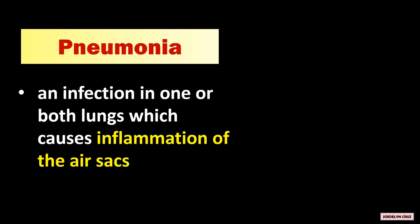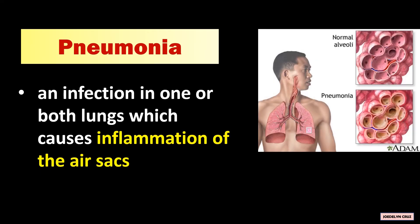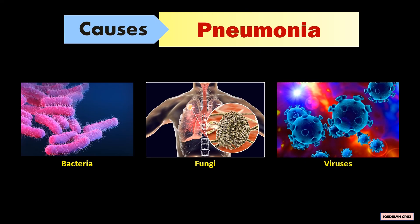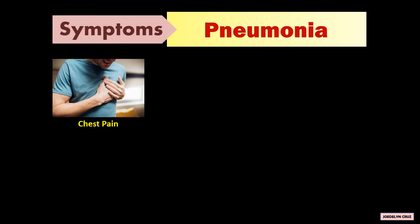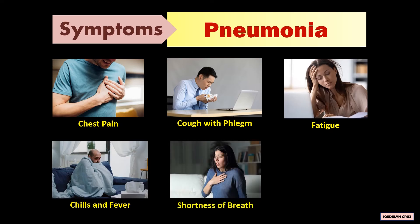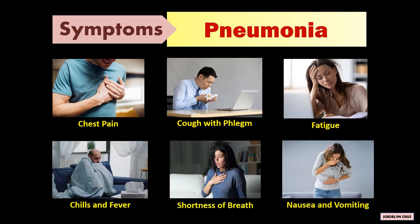Pneumonia is an infection in one or both lungs which causes inflammation of the air sacs. In this picture, these are the normal alveoli, while these are the inflamed alveoli. The infection is caused by bacteria, fungi, and viruses such as SARS-CoV, MERS-CoV, and, recently, SARS-CoV-2. The symptoms of pneumonia are chest pain, cough with phlegm, fatigue, chills and fever, shortness of breath, nausea and vomiting.